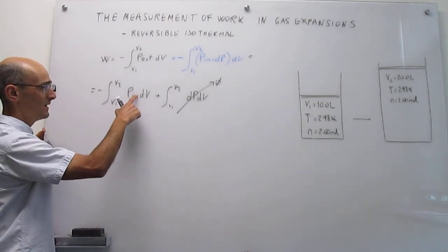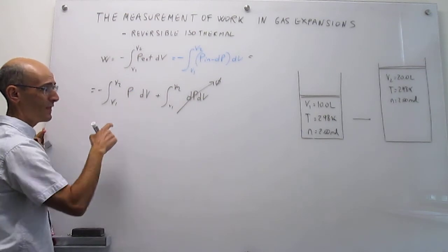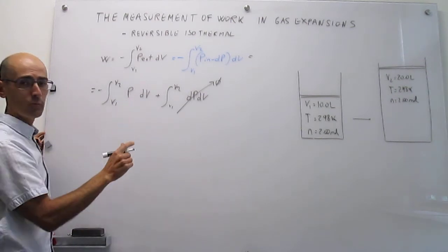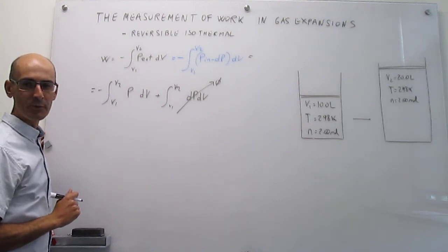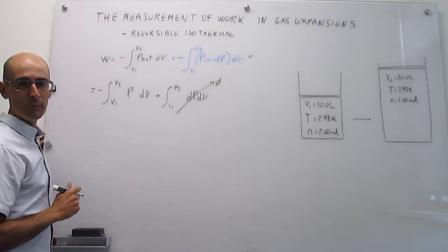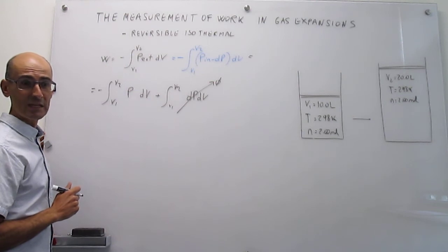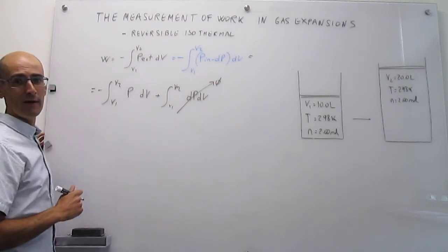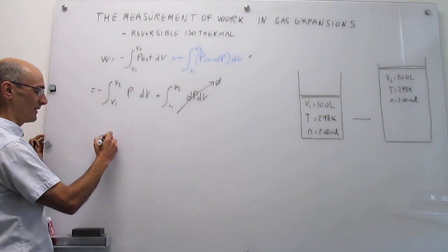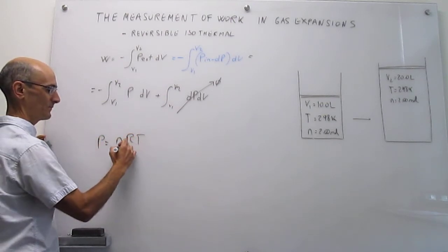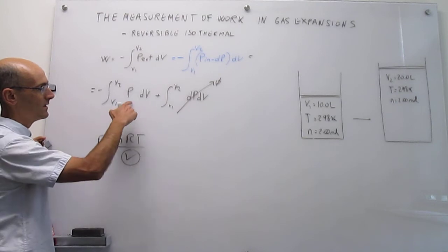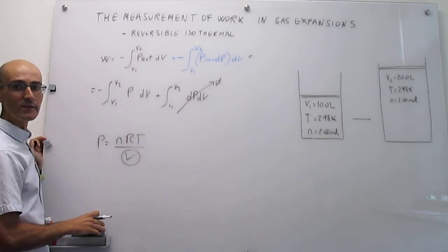What we're left with is the internal pressure of the gas, which is simply the pressure of the gas. That pressure is changing, so we cannot take it out of the integral. However, since this is an ideal gas, we can reformulate this pressure as a function of volume using the ideal gas equation of state. That makes the integration very straightforward, because we'll have a dependence on volume inside the integral.